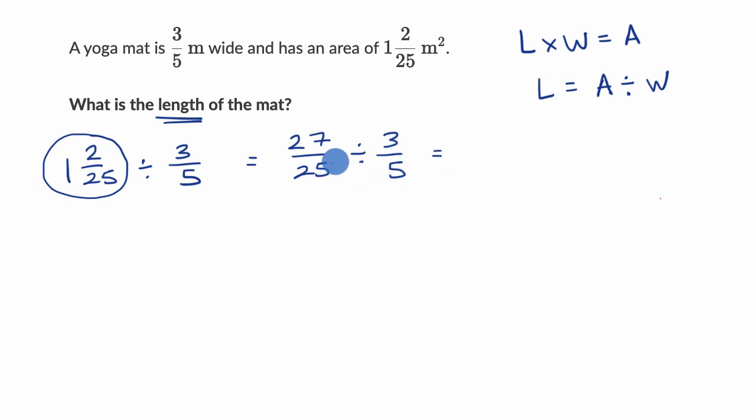We've already talked about how this is saying how many three-fifths can fit into 27-twenty-fifths. And we've given the intuition why this is the same thing as just multiplying 27-twenty-fifths times the reciprocal of three-fifths, which is five-thirds.